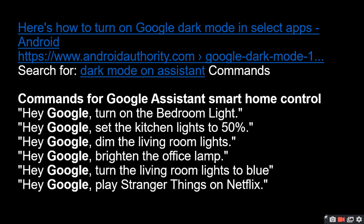To learn how to turn on dark mode and use it on Android, visit androidauthority.com. Now, for smartphone control commands for Google Assistant: say 'Hey Google, turn on the bedroom light', 'Hey Google, set the kitchen light to 50%', 'Hey Google, dim the living room light', 'Hey Google, brighten the office lamp', 'Hey Google, turn the living room light to blue', 'Hey Google, play Stranger Things on Netflix'.